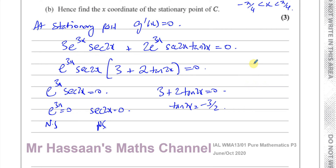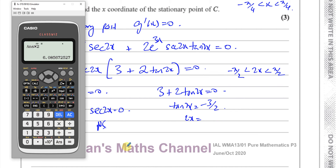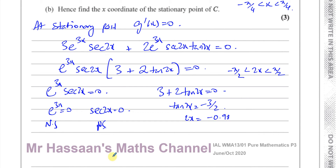Since our x is between minus pi over 4 and pi over 4, we need to change the range for 2x by multiplying by 2, giving minus pi over 2 to pi over 2. So we say 2x equals inverse tan of minus 3 over 2. We must work in radians because we're using calculus with trig functions. That gives approximately minus 0.9828.